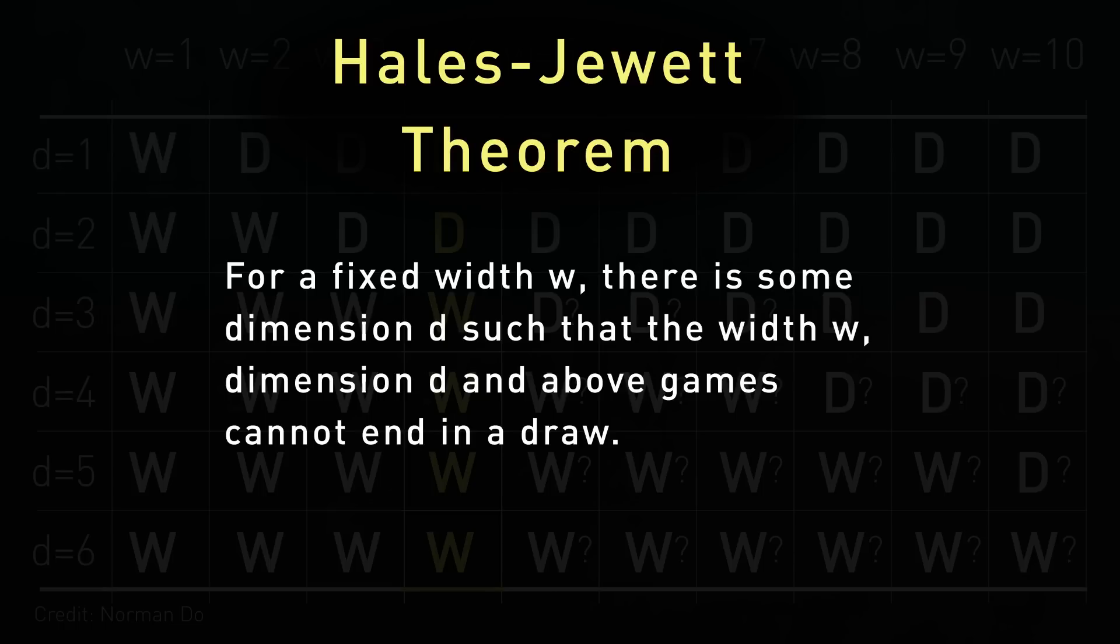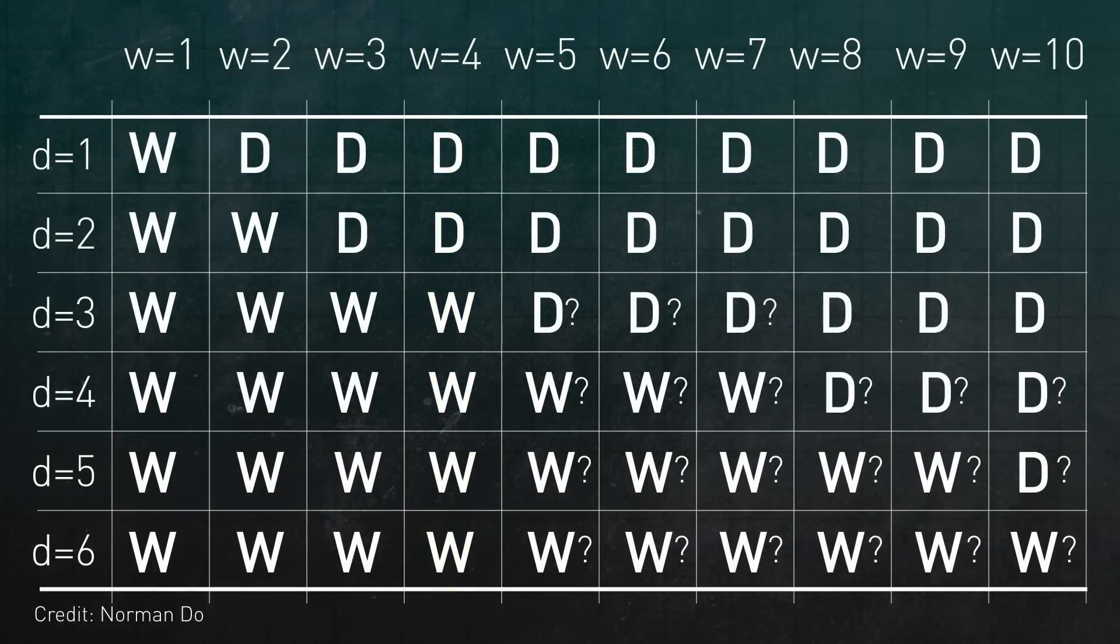And this means that X must have a winning strategy. So, each column of the chart, except the first, begins with a draw. And the Hales-Jewitt theorem says that it eventually becomes all wins for X. But we don't know what happens in between. We don't know whether it suddenly switches to win or if there are oscillations. Win, lose, win, lose.